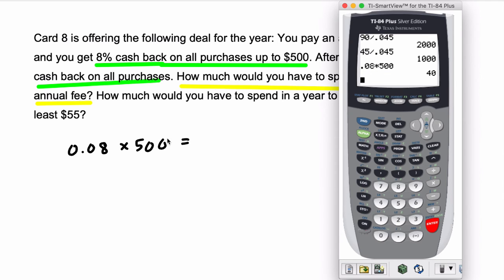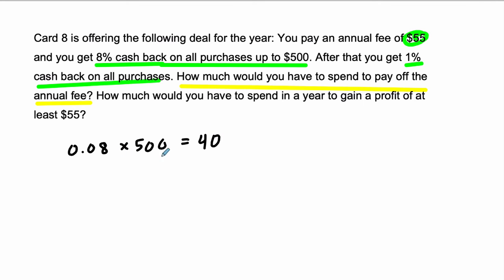That's going to give us $40. So we get $40 from the first $500 we spend, but we have to pay off the $55, so we still have $15 to go. So my question is, now that we have 1%, 0.01, of what amount of money X is going to be equal to $15? That's the amount remaining.